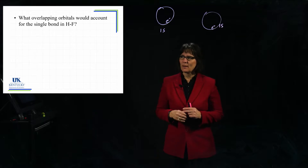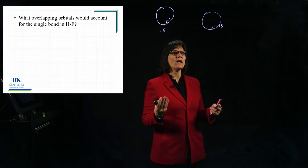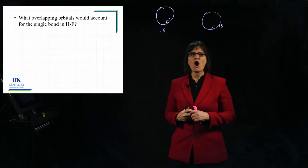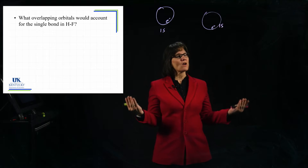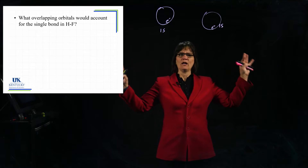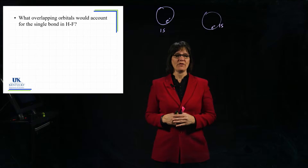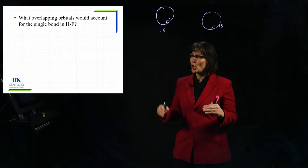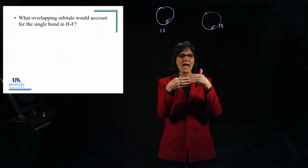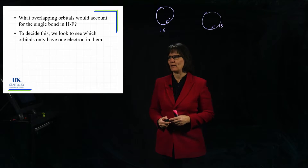The next example is another diatomic molecule: HF. If we want to describe the bonding of HF using valence bond theory, all we have to do is describe what atomic orbitals are overlapping. In valence bond theory, we describe the bond by stating what atomic orbitals are overlapping to make that bond. Let's work on how we determine that.